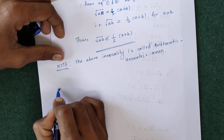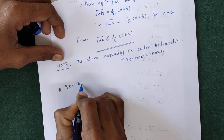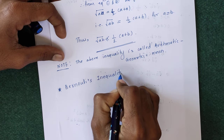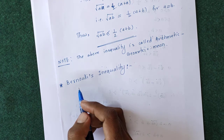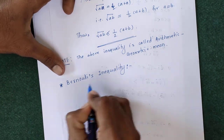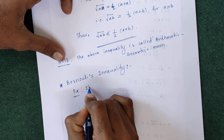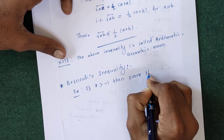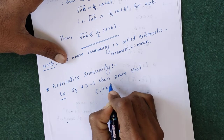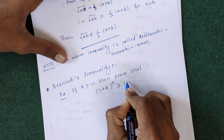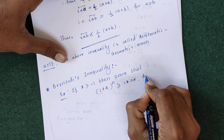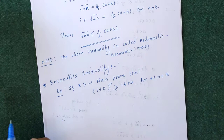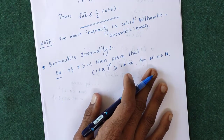The next topic is Bernoulli's inequality. The statement is: if x > −1, then prove that (1 + x)^n ≥ 1 + nx for all n belonging to the set of natural numbers.